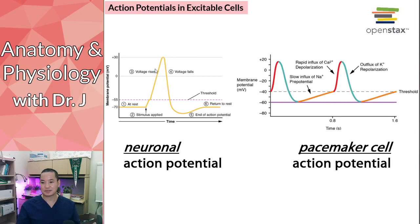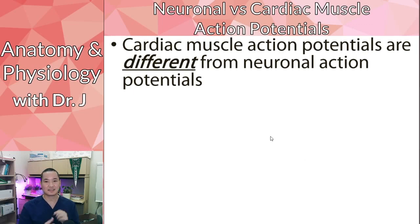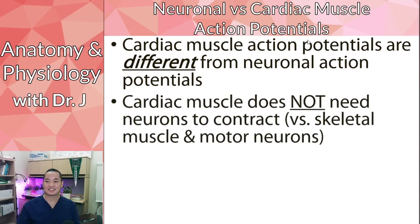So action potentials, they have the same overall shape if it's in the same type of cell. Now, what I really want to emphasize, cardiac muscle action potentials are different from neuron action potentials. And the thing is that the cardiac muscle can actually, especially these pacemaker cells, they do not need neurons to contract. If you remember motor units, you have motor neurons, and they innervate the skeletal muscle fibers.